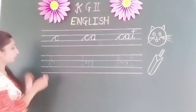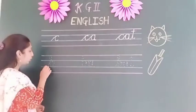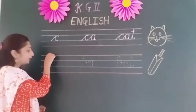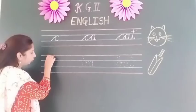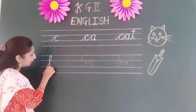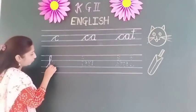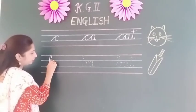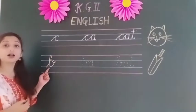Now, the second letter. Put a dot on the second blue line, go up to the first red line, and make a small curve. Go to the second blue line, come down to the second blue line, and make a curve. Now go up to the first blue line and make a curve. What did we make? B.